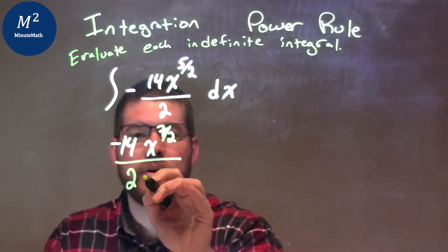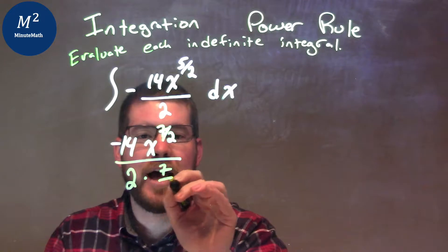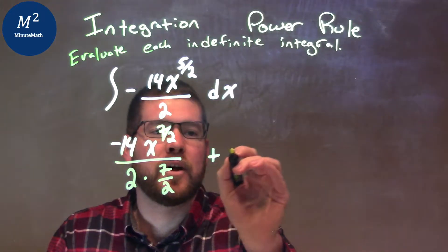And divided by, well, 2's out front, we'll bring a 7 halves to the denominator. 7 halves. And don't forget a plus c.